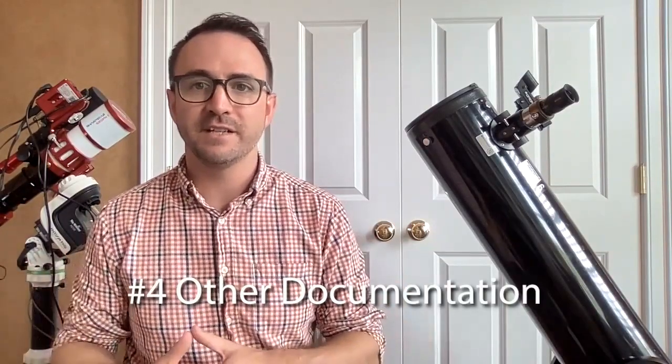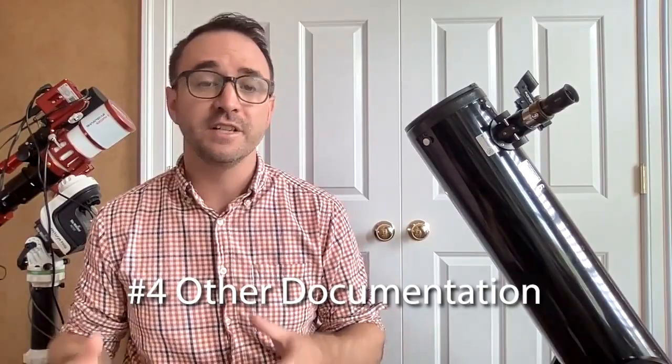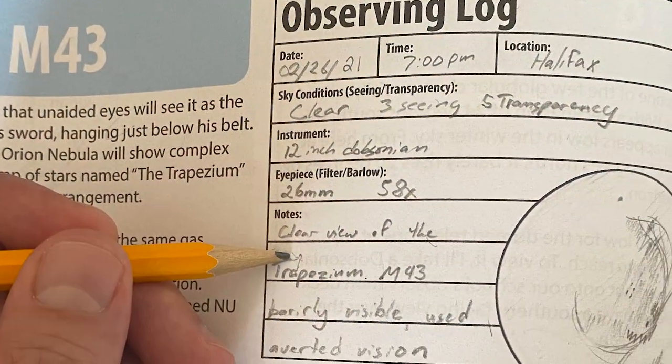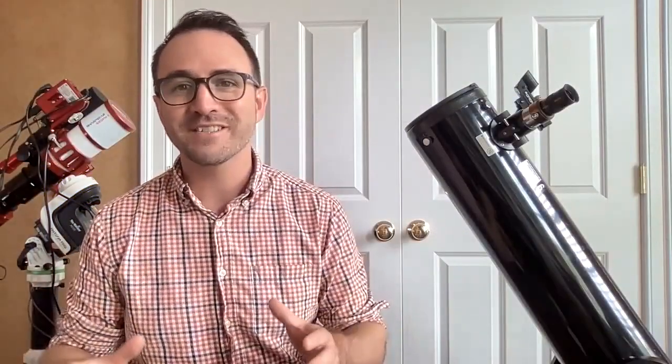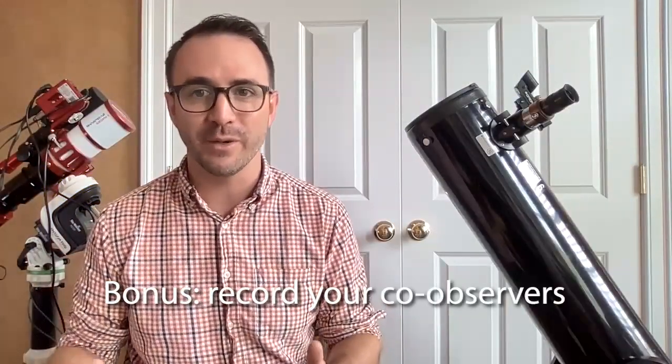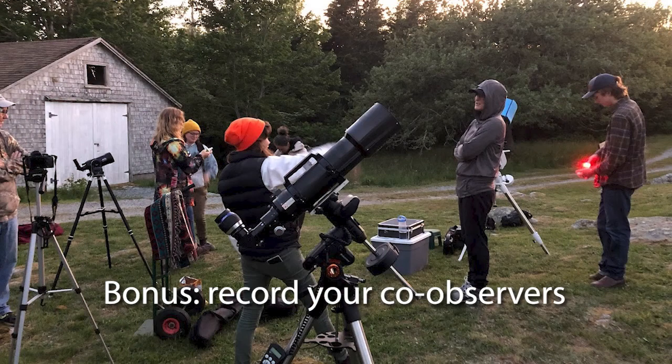And there are some other things that you'll need to record from your observation session, like the telescope, eyepiece, barlow, and filter combination you're using, and the date, time, and location. As a bonus, record who you're observing with. This will help jog your fond memories of the event when reviewing your notes.